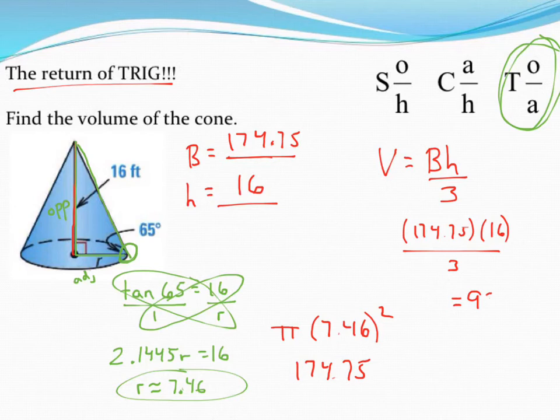Include a good label. Volume is always measured in cubic feet, or cubic units, so in this case cubic feet. So there is going to be my volume using trigonometry to help me find some missing information.